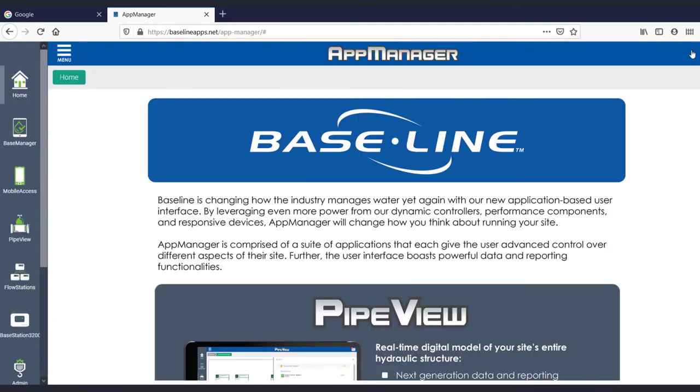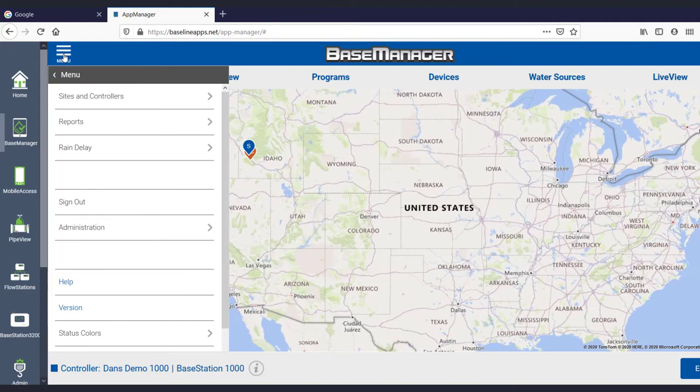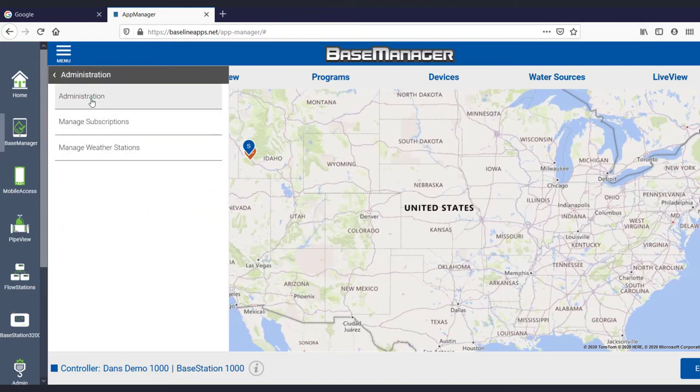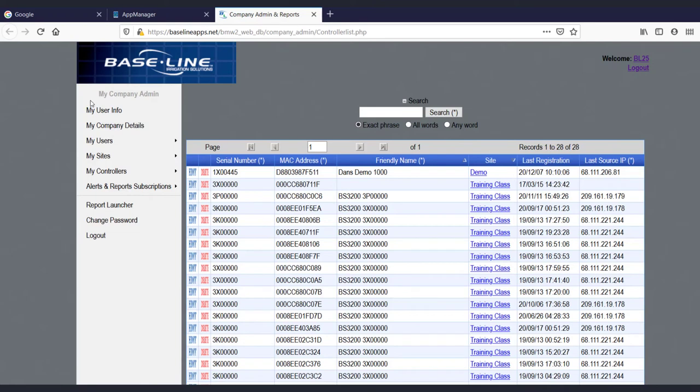Go to BaselineApps.net, log in to your account, and open Base Manager. In the menu in the upper left corner, select Administration and then Administration again. In this new tab, go to My Controllers and add a new controller.